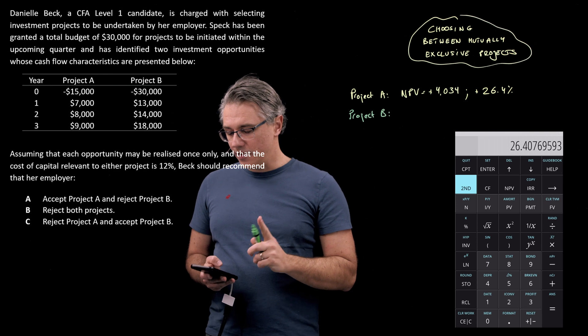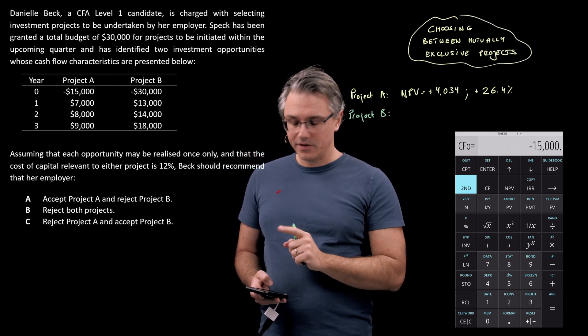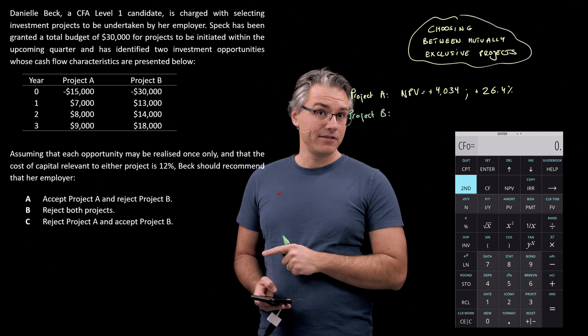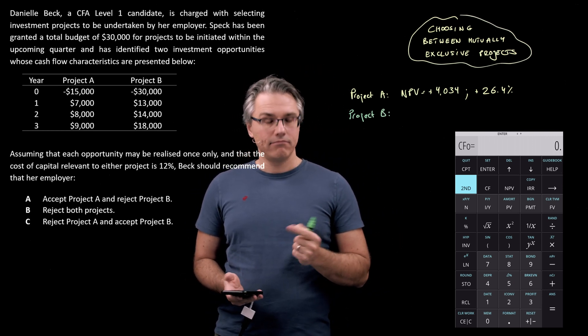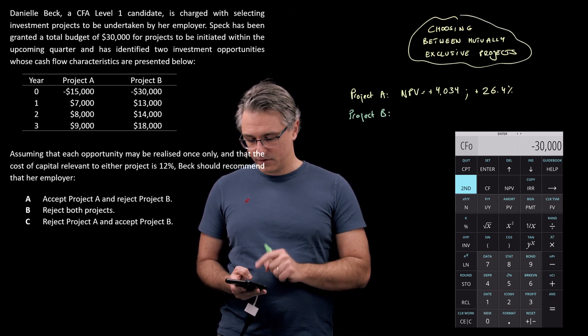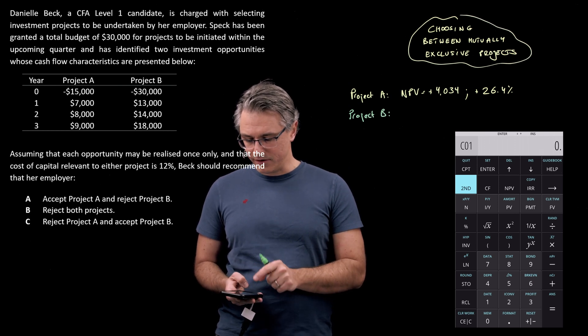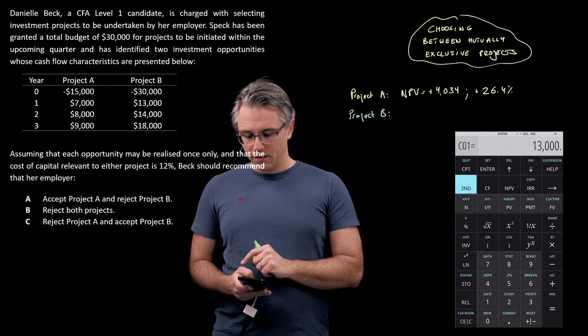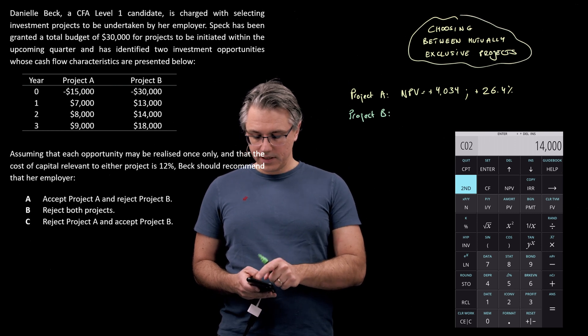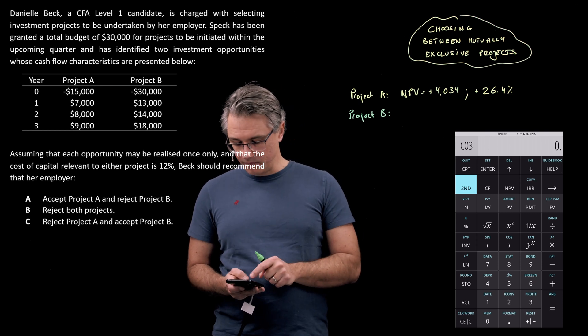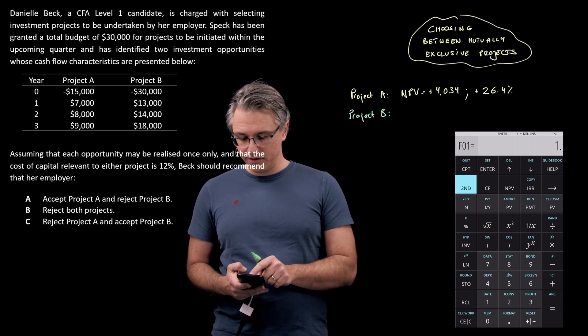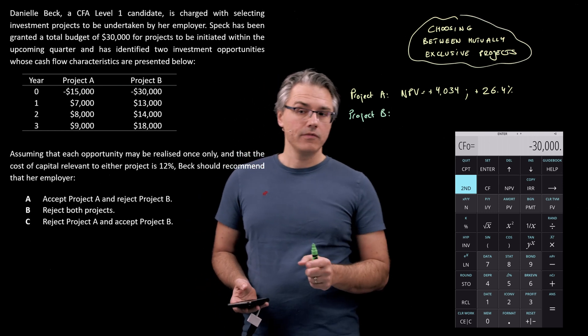Okay, so back to the cash flow, but this time completely different data. So once again, second followed by CE/C to clear the data from the worksheet, and let's provide the fresh inputs. So that's 30,000 negative, sorry, negative followed by enter, down arrow once, 13,000 enter, down arrow twice, 14,000 enter, down arrow twice, 18,000 enter. Let's just review the entries: 14, 13, 30, seems good.